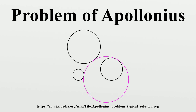Solutions to Apollonius' problem are sometimes called Apollonius' circles, although the term is also used for other types of circles associated with Apollonius. The property of tangency is defined as follows: first, a point, line, or circle is assumed to be tangent to itself.